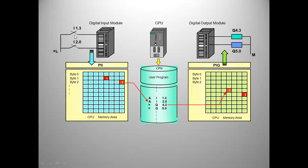For example, if inputs I1.3 and I2.0 are connected to the input module, they go to the CPU memory. The CPU has separate memory files — byte number one, bit number three, and byte number two, bit number zero — where the status is updated as one. This image goes through the program, the program executes, the outputs are operated in the output file, and from there the signal goes to the output module. This is how the cycle works in the CPU.